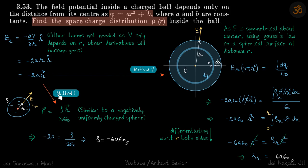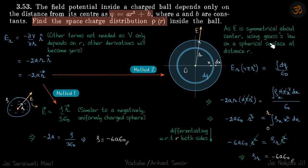However, this is not a standard method — it worked here by coincidence because the two expressions were similar. If there were an r² term, this comparison method would not work. So we need to know the standard method as well. In the standard method, we calculate the charge inside a Gaussian surface and equate Q_in/ε to E times the area of the spherical surface. Since the distribution is symmetric — it only depends on r — we apply Gauss's law on a spherical surface at distance r.